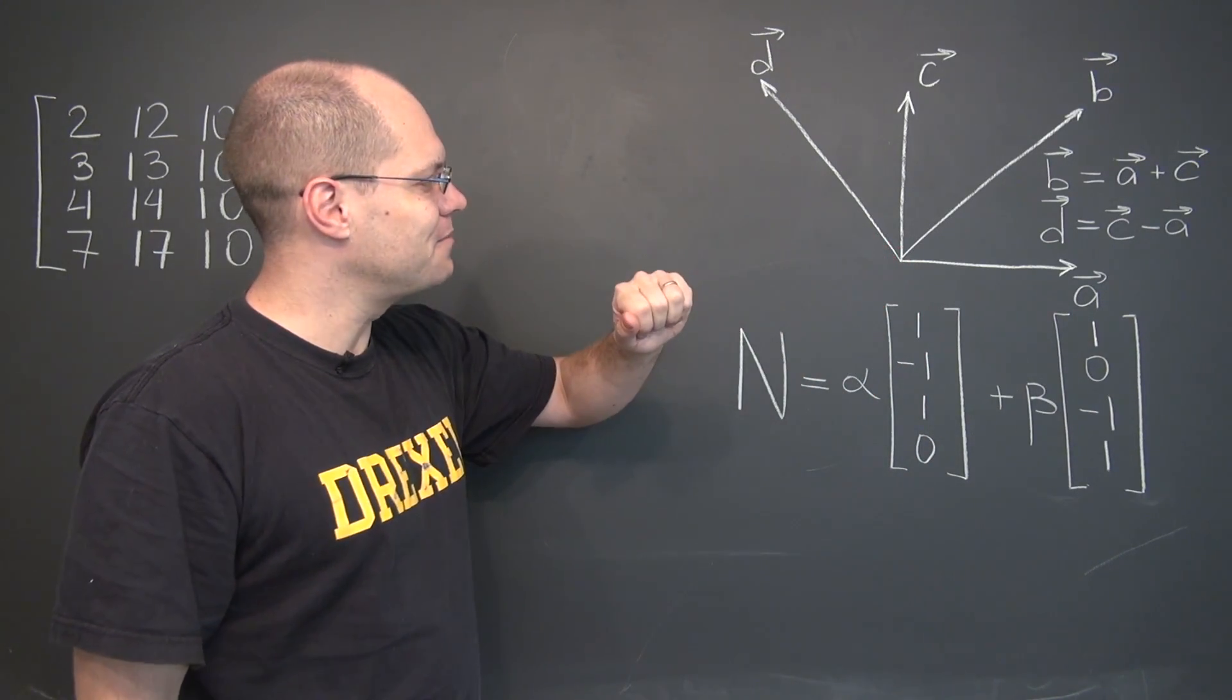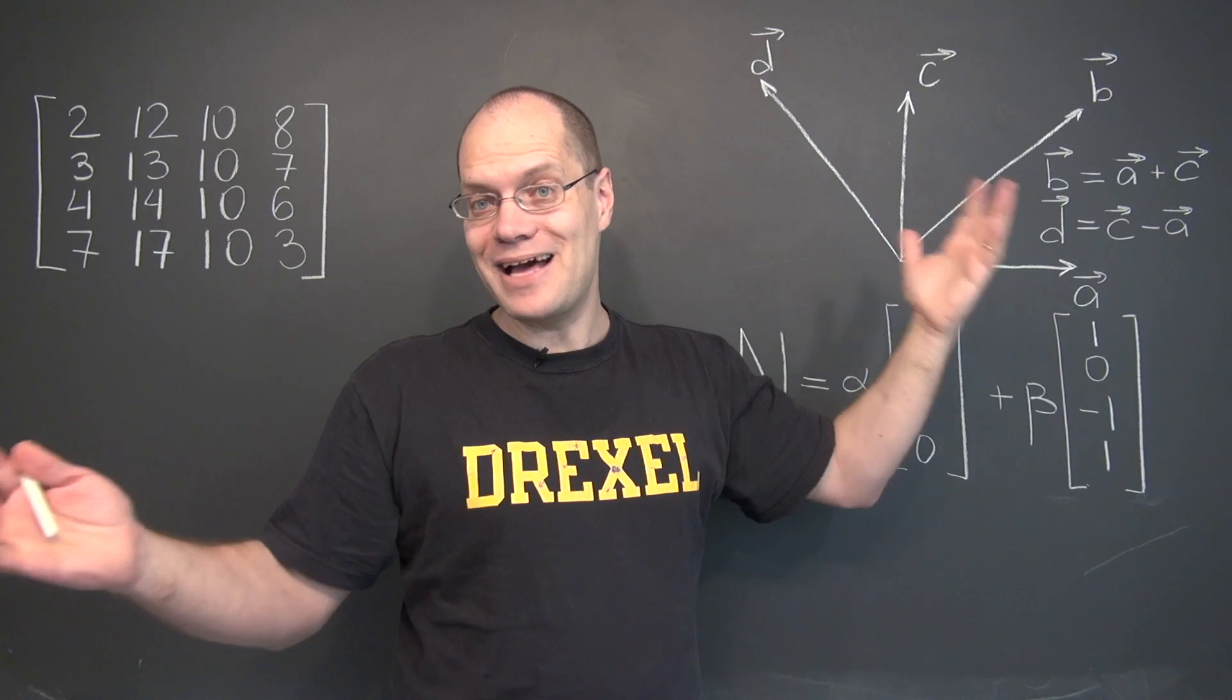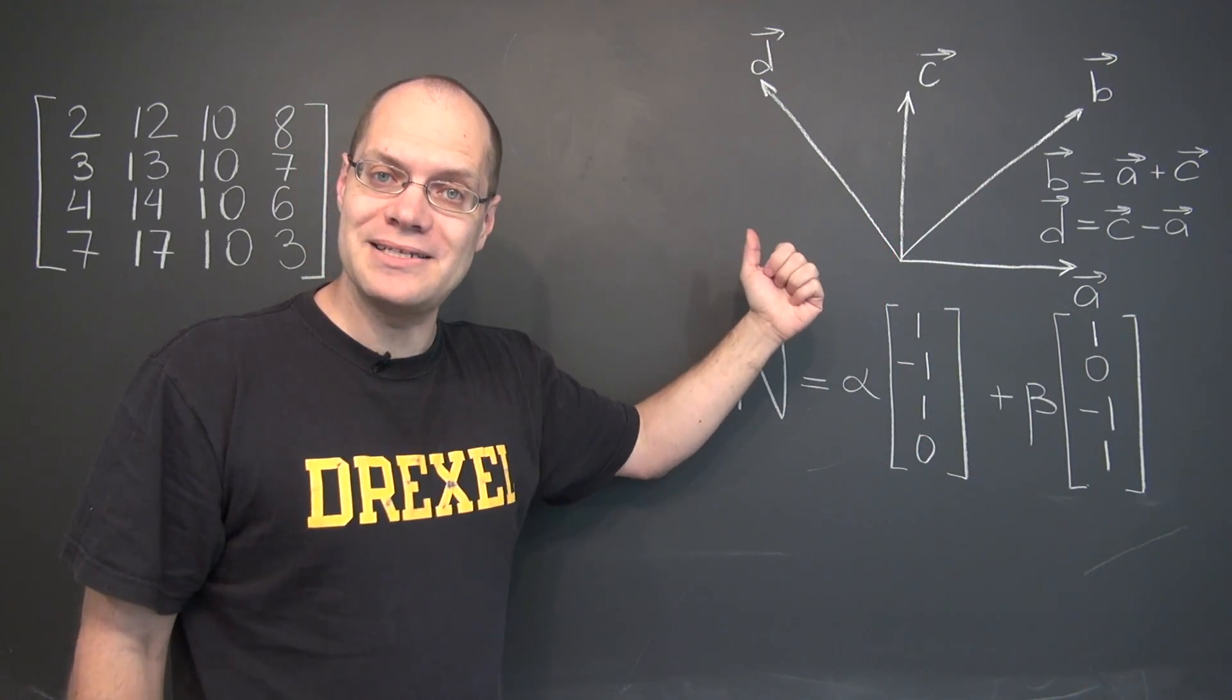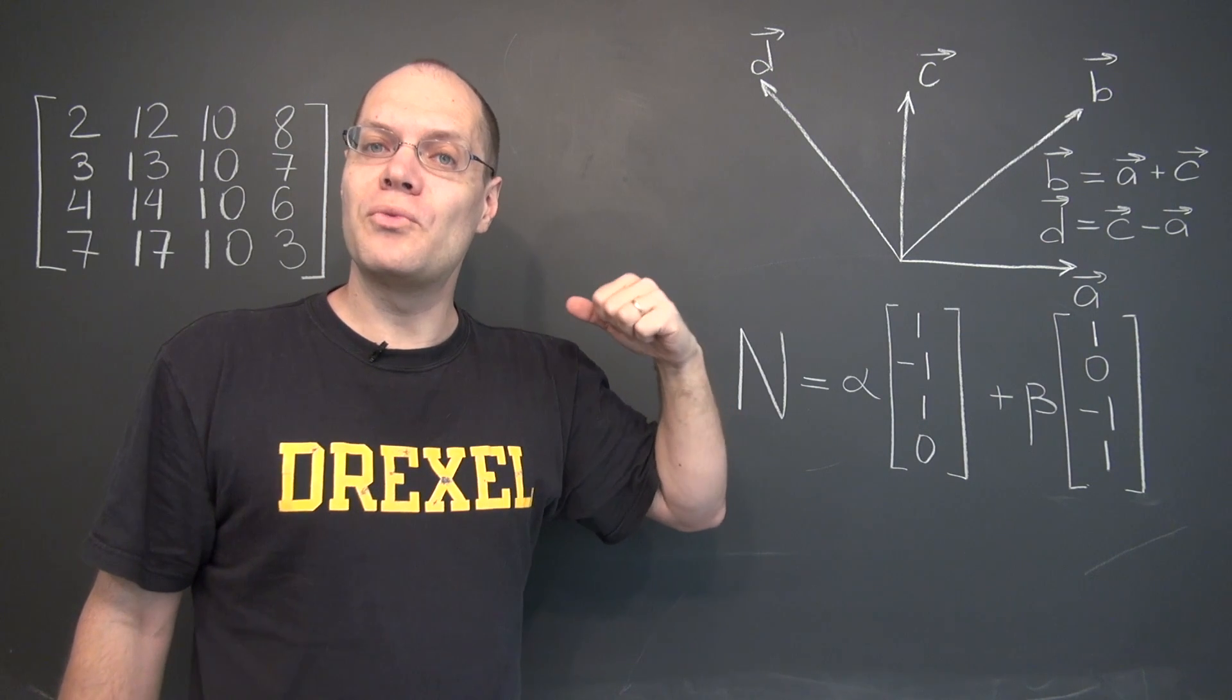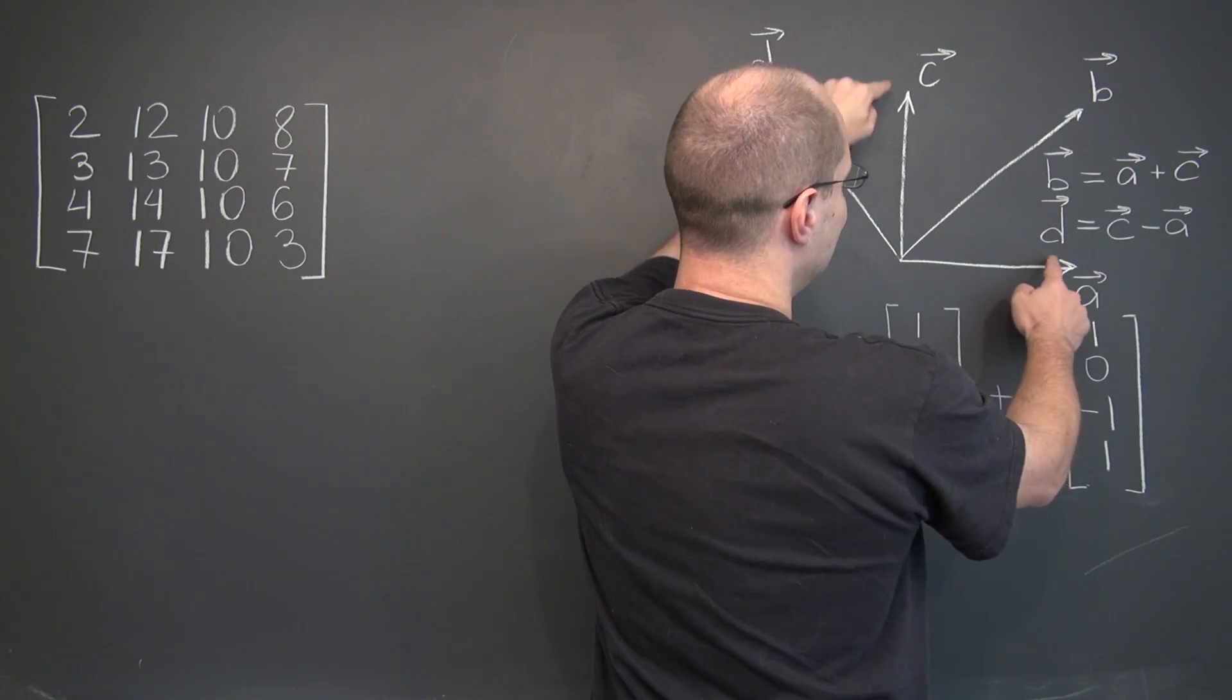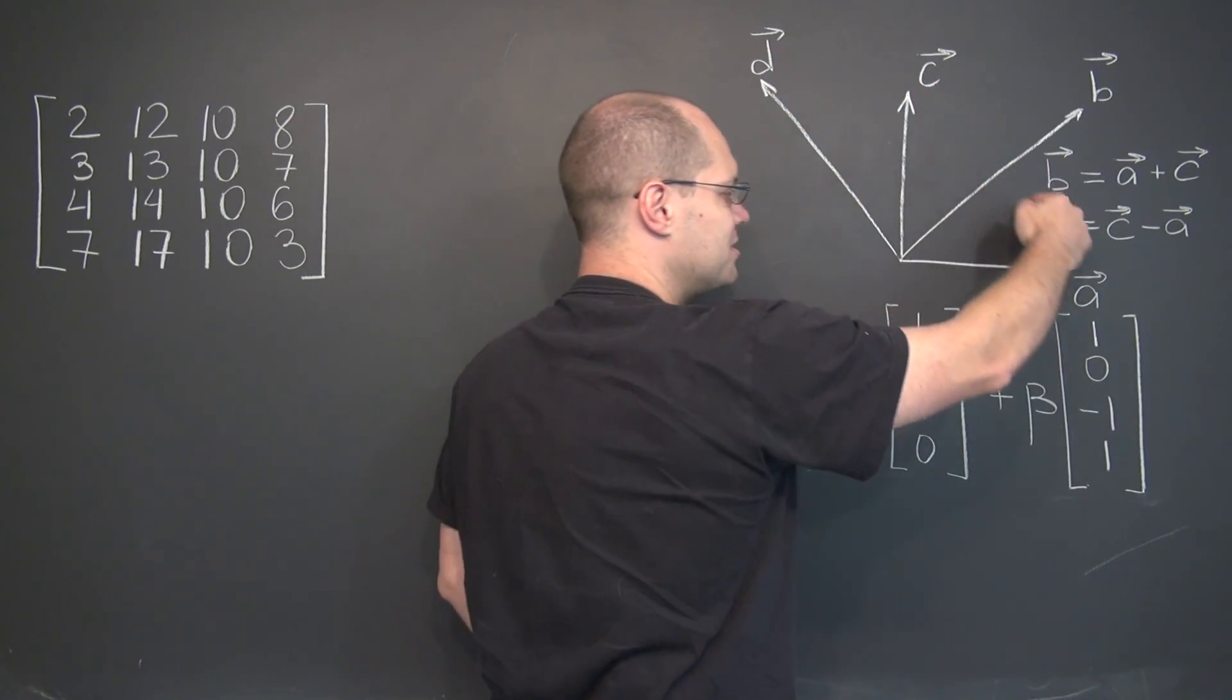First, let's revisit this example. We were given four geometric vectors, A, B, C, and D in alphabetical order, and we discovered that they were linearly dependent. In fact, in more ways than one. For instance, we noticed that B is the sum of A and C, and D is the difference between C and A.